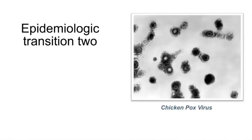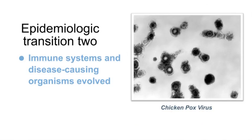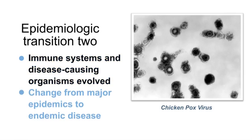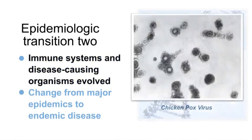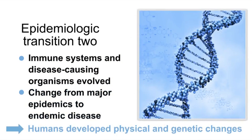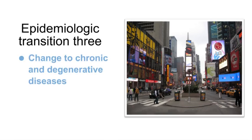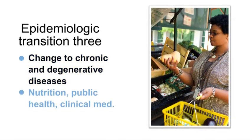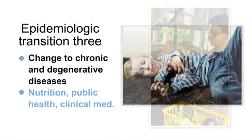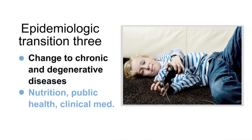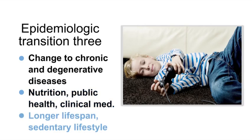The second transition was a time where human immune systems and disease-causing organisms both evolved, resulting in a change from major epidemics of disease to endemic disease. People developed physical and genetic changes that served to minimize the effects of diseases. The third transition resulted when disease patterns changed from infectious to chronic and degenerative diseases in developed parts of the world due to improvements in nutrition, public health, and clinical medicine. Cardiovascular diseases and cancer began to occur more during this transition, often associated with a longer lifespan and a sedentary lifestyle.